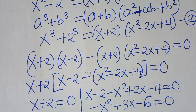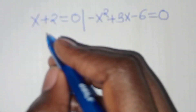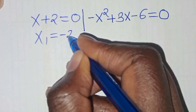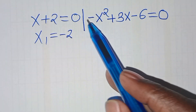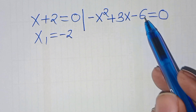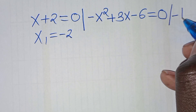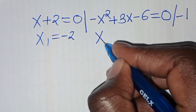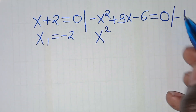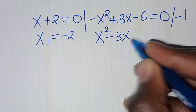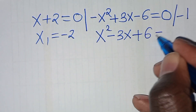From here, x1 is equal to minus 2. Let's solve for the other values of x: we have minus x squared plus 3x minus 6, this is equal to 0. The first thing is to multiply by negative 1 to form a quadratic equation, which is now x squared, multiplying by minus 1 this is minus 3x, then minus 6 times minus 1 this is plus 6, this is equal to 0.